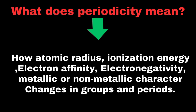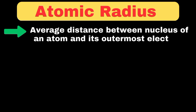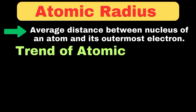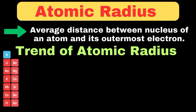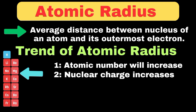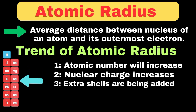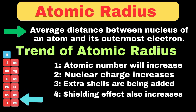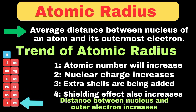First, we will start with the atomic radius. It can be defined as the average distance between the nucleus of an atom and its outermost electrons. As we move from top to bottom in any particular group, the atomic number increases, which means nuclear charge is increasing. Importantly, extra shells are being added from top to bottom in the group, and the shielding effect also increases. Due to the addition of extra shells, the distance between the nucleus and the outermost electrons increases. Hence, the atomic radius increases from top to bottom in a group.